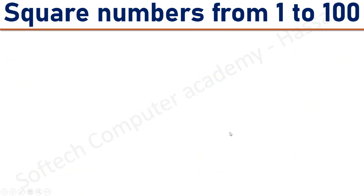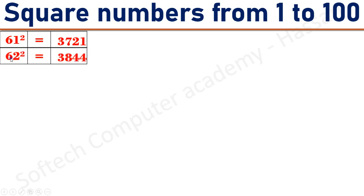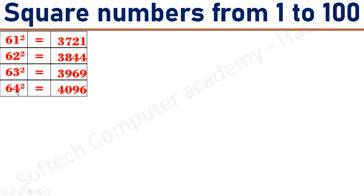61 square equals 3721. 62 square equals 3844. 63 square equals 3969. 64 square equals 4096. 65 square equals 4225.